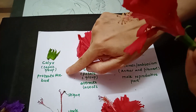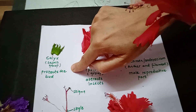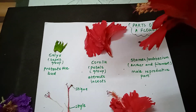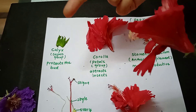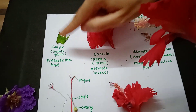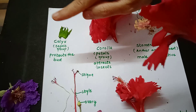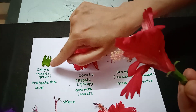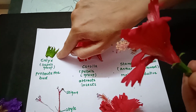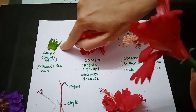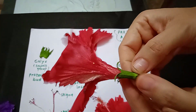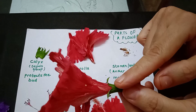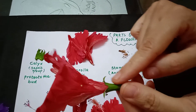The calyx protects the bud from insects, injury, or any harm. When the flower has not yet bloomed and is in the bud stage, this calyx structure protects it. Now, what is the second layer of the flower?